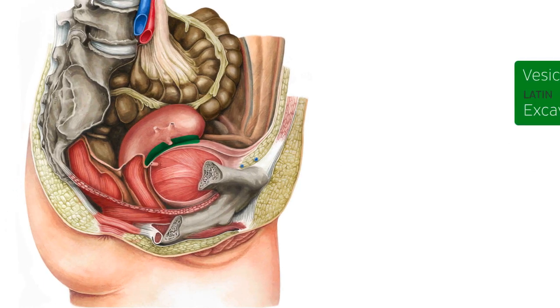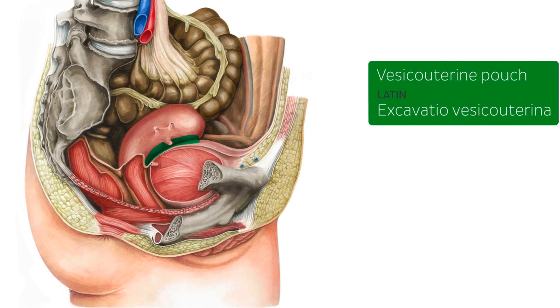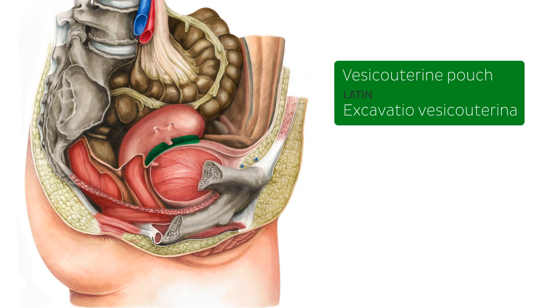Here we are looking at a sagittal plane view of the pelvic area of a female, and the vesicouterine pouch shown in green is an anatomical space situated between the uterus, here, and the urinary bladder, which is just here. And it's these structures that give the vesicouterine pouch its name.